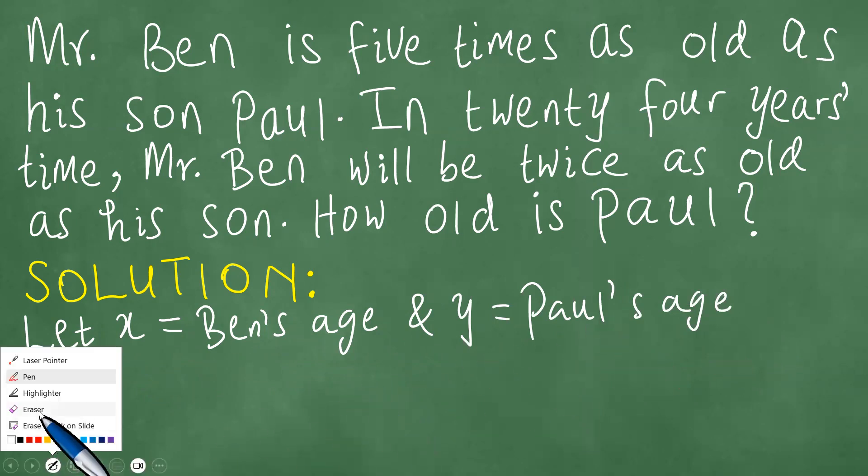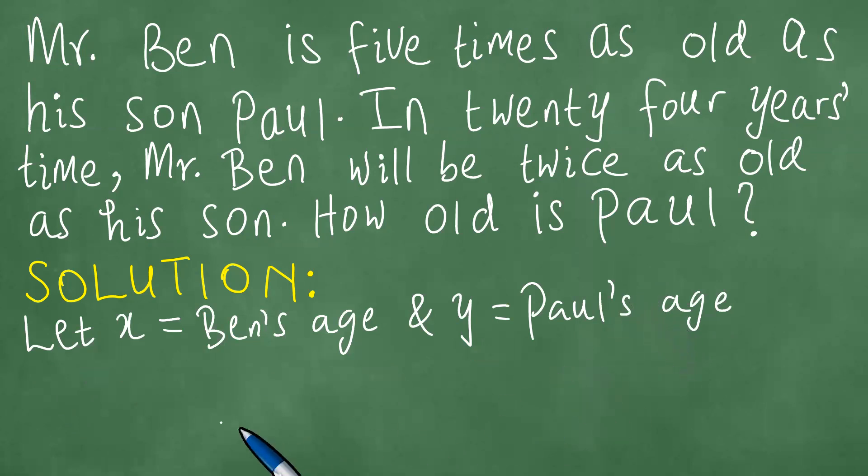Right, so now what we do is we formulate specific equations as follows. Because we know that Mr. Ben is five times as old as his son, it means that his son's age is less and we need to multiply that by five. That gives us an equation.